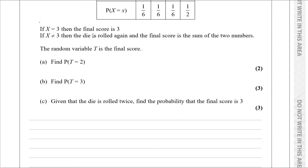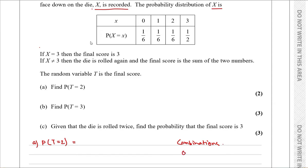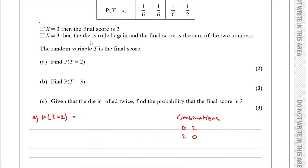Find the probability of T equals 2. We need to find the combinations that will give us a sum of 2. The combinations can be: 0 and 2, 2 and 0, and 1 and 1. Finding the individual probability of each combination: 1/6 times 1/6, 1/6 times 1/6, 1/6 times 1/6. The sum of all these probabilities gives P(T=2).